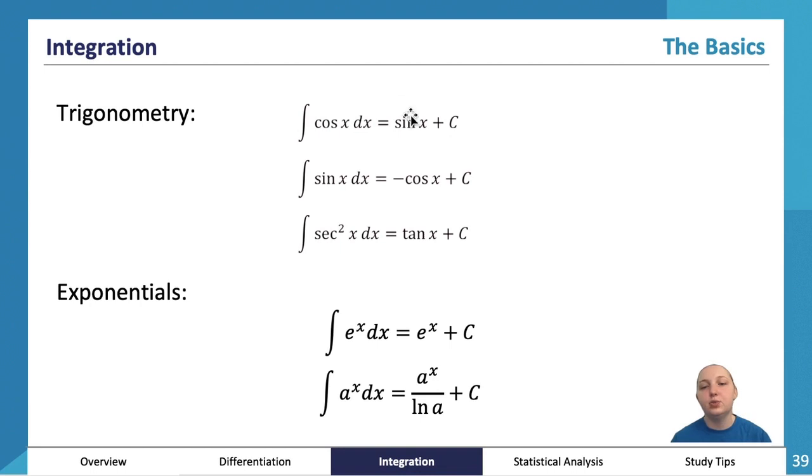You'll see these are like the opposites of differentiation because we're going the other way. For exponentials: ∫e^x dx = e^x + C. Since e^x doesn't change when we differentiate it, it won't change when we integrate it either. Of course, we're still accounting for the constant, so we include +C.